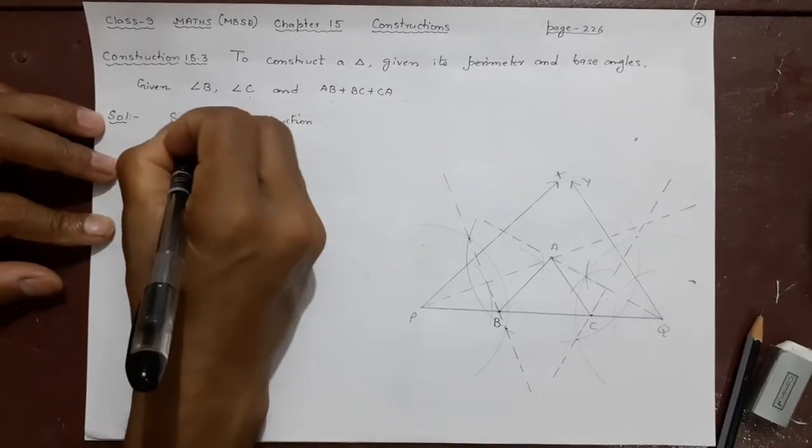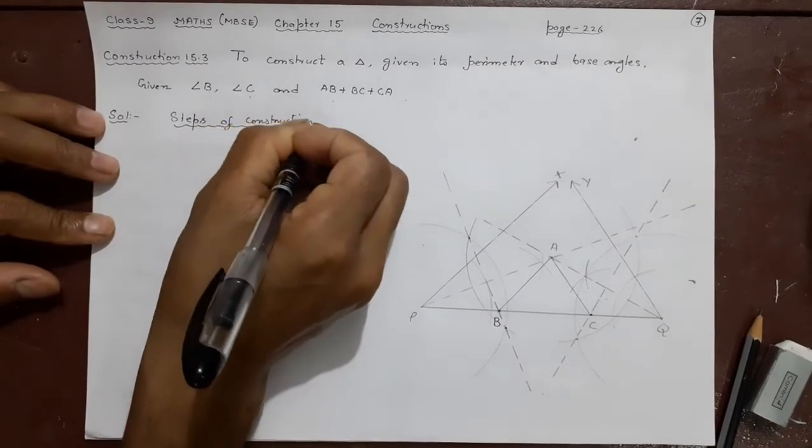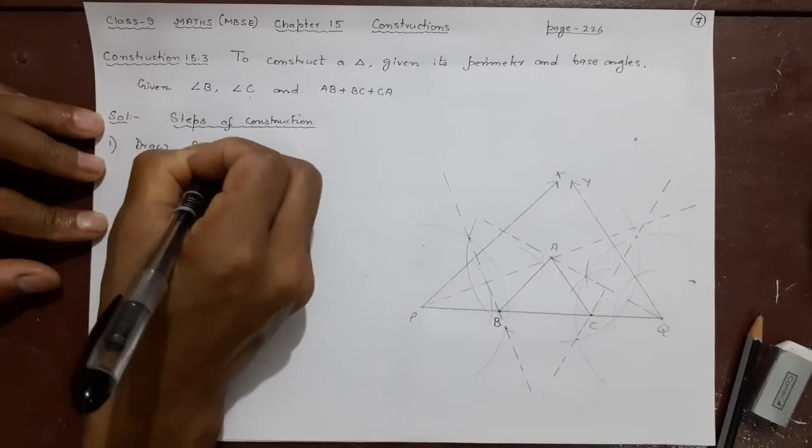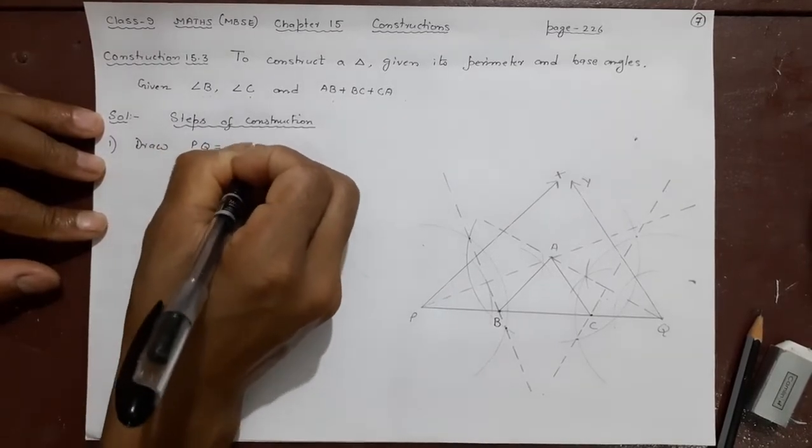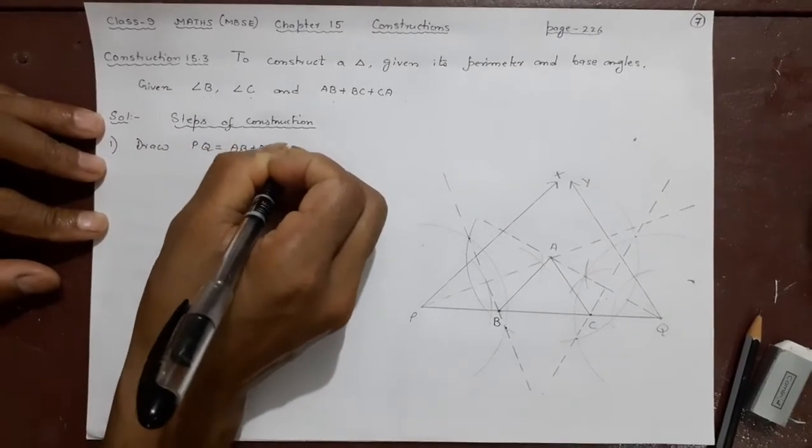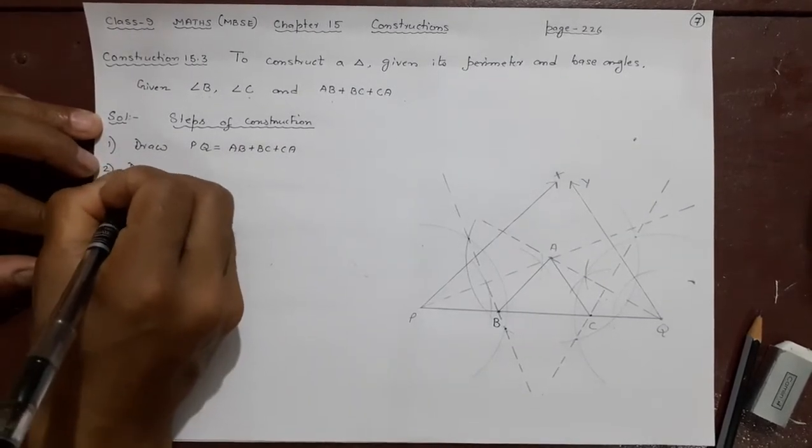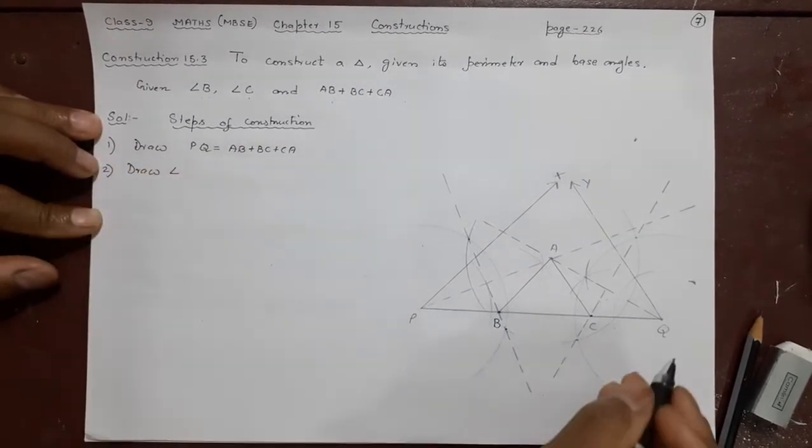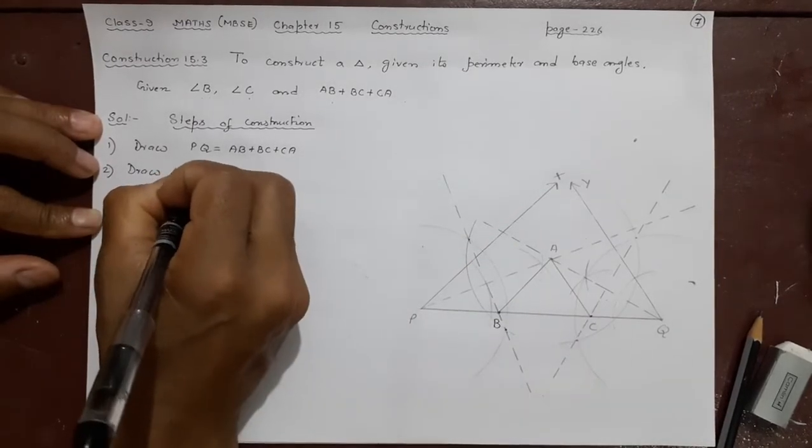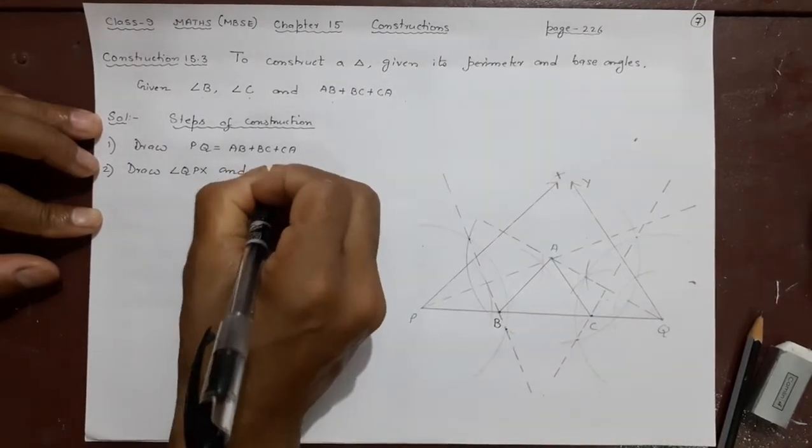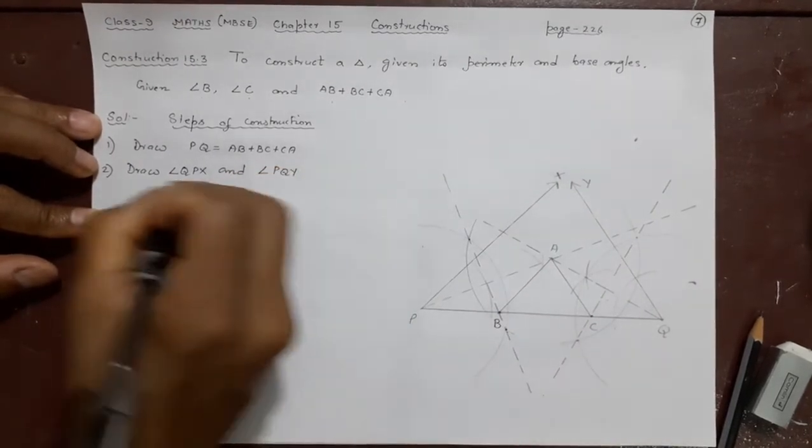Number one, what you did? First one, you made that PQ. Draw PQ equal to AB plus BC plus CA. Done. Next step, you remember what you did? Draw or construct angle QPX and that side also you did PQY. PQY. Done.